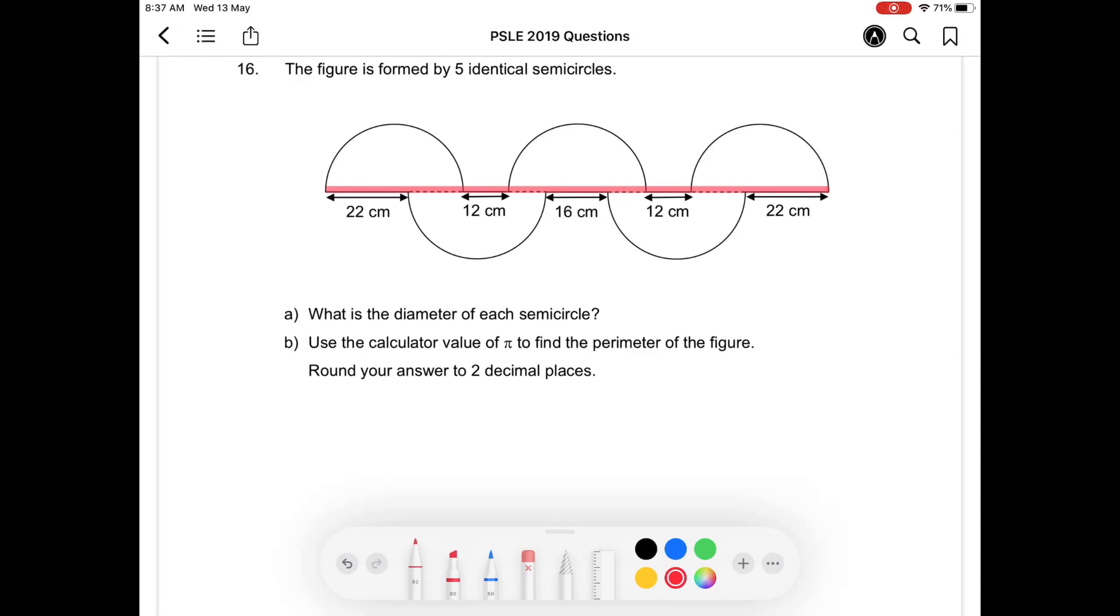I'm going to first label D for diameter. If you were to make use of the three semicircles above the red line, you'll realize that it's made up of three diameters and 2 times 12 cm here. So with that, I can form the first equation.